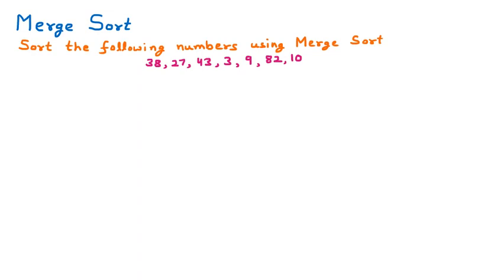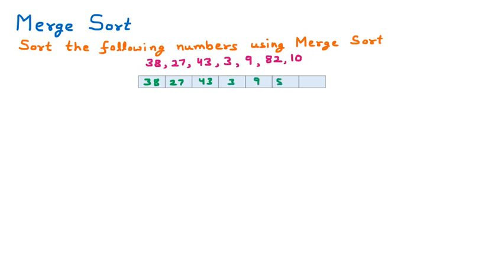We are discussing merge sort. Merge sort works on the divide and conquer technique — whenever elements are given to us, we break them down and afterward merge them, which is why the name is merge sort. To understand it, we will sort the following numbers using merge sort: 38, 27, 43, 3, 9, 82, and 10. We place all these numbers into an array.